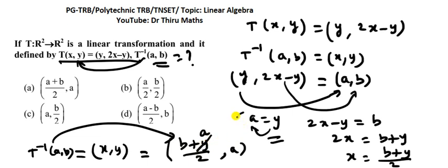Option A: T inverse of (a,b) equal to (a plus b divided by 2, a). Option A is correct. Thank you, this is the model of a question that you have to answer easily.